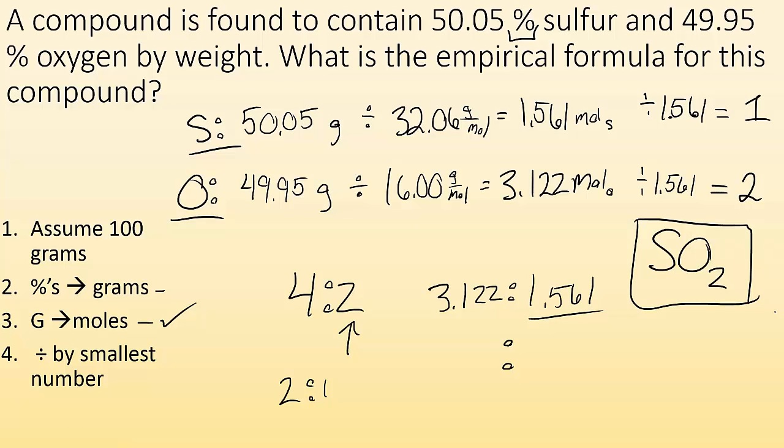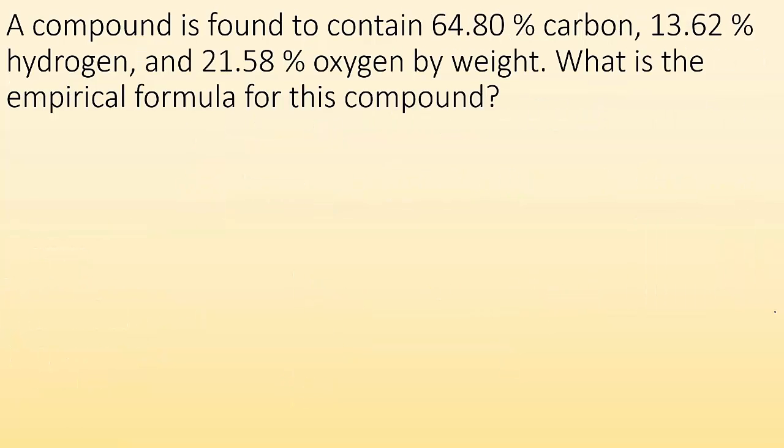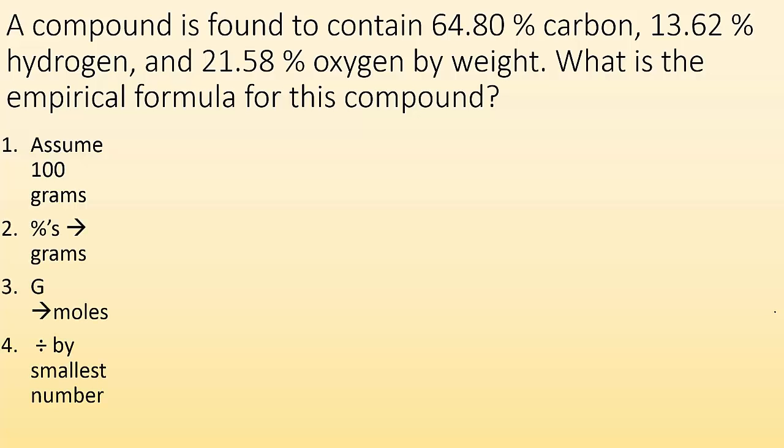Let's try another one. So let's throw in three elements. A compound is found to contain 64.8% carbon, 13.6% hydrogen, and 21.58% oxygen by weight. What is the empirical formula of the compound? So remember, assume 100 grams, the percents become grams, convert grams to moles, and divide each by the smallest number of moles between the three.